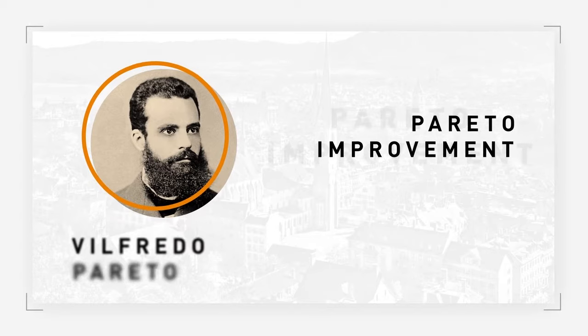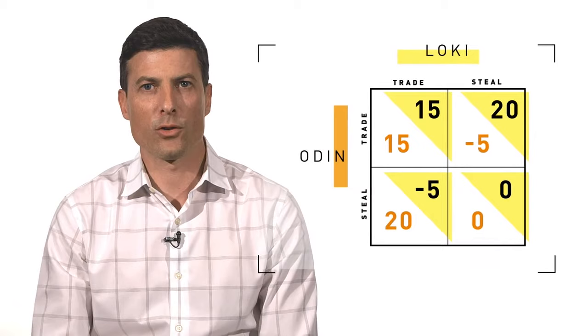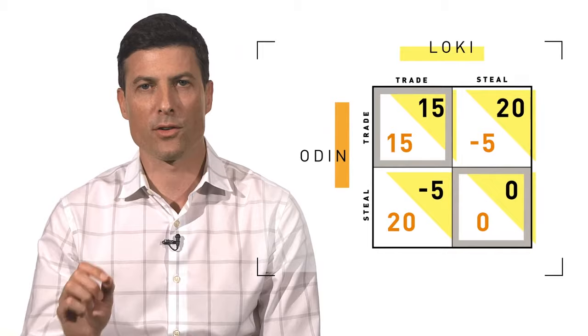Some games have multiple Nash equilibria — multiple stable outcomes — but not all of those equilibria are equally good. A common concern is whether something can be done to move from an inferior equilibrium to a superior one in which the players are better off by their own lights. One way to measure an improvement is to ask whether there is any other equilibrium such that at least one player is better off and none are worse off. This is called a Pareto improvement, named after Italian economist Vilfredo Pareto. One payoff Pareto dominates another if at least one player is better off and none are worse off. In the trading game, there's only one Nash equilibrium — steal-steal — and it's Pareto dominated by the outcome in which both trade rather than both steal.